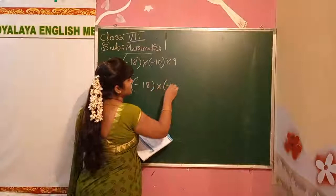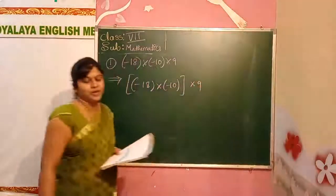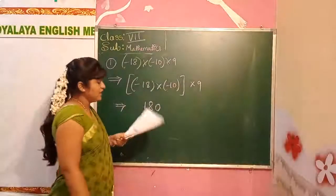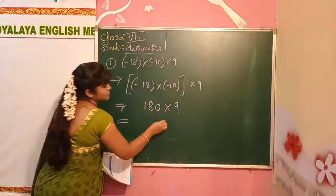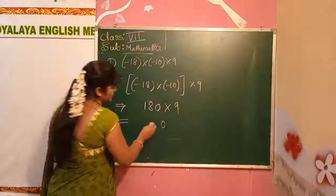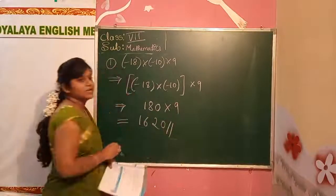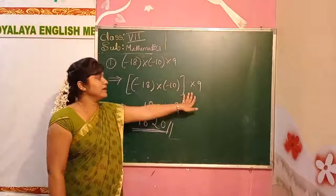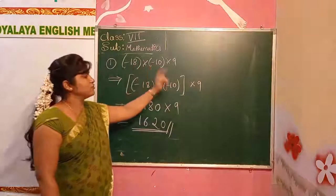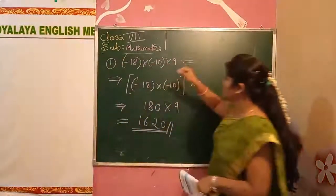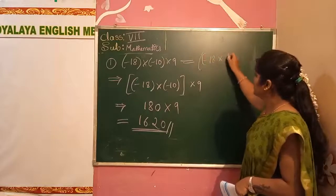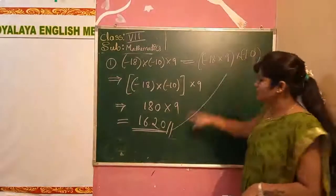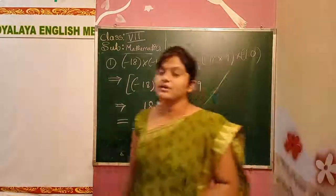First problem: minus 18 into minus 10 into 9. I am making a group of minus 18 into minus 10. Multiplying these two gives 180. Now multiply 180 with 9. 9 zeros are 0, 9 ones are 9, giving 1620. We can also do the group as minus 18 into 9 into minus 10, but we get the same answer.